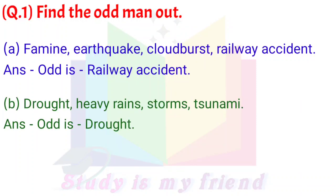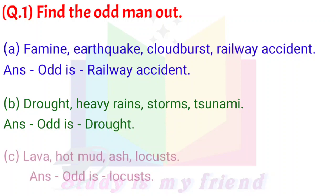B) Drought, Heavy Rains, Storms, Tsunami. Answer: The odd one out is Drought.